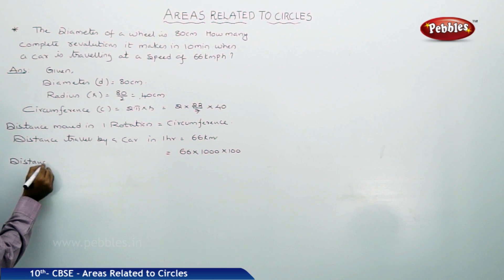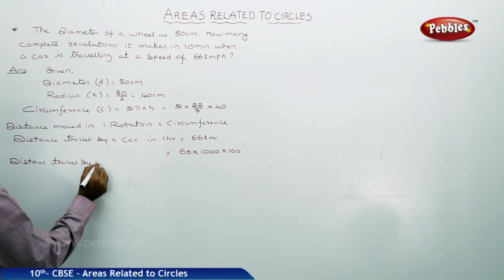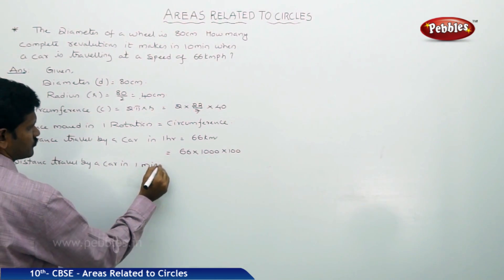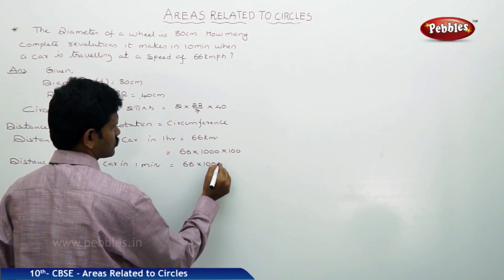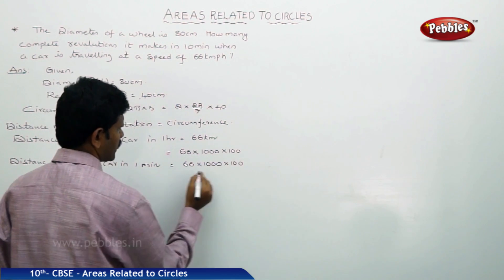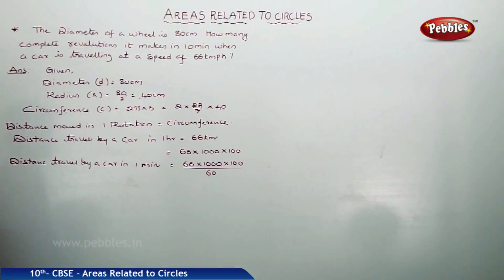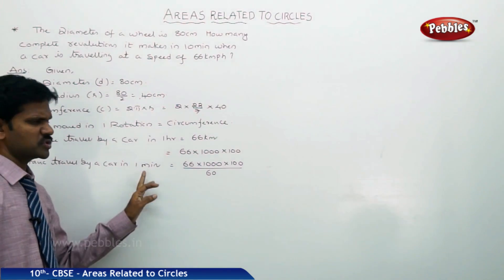Distance traveled by a car in 1 minute is equal to 66 times 1000 times 100 by 60, because 1 hour contains 60 minutes.